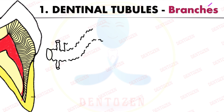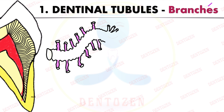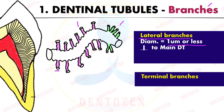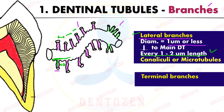Dentinal tubules have two types of branches. From their lateral surface they give lateral branches, and where they end near the junctions they give terminal branches. The lateral branches have a diameter of about one micrometer or less, start perpendicular to the main tubule, and the distance between two lateral branches is one to two micrometers. These lateral branches are given a special name — they are called canaliculi or microtubules, which can be an important exam question.